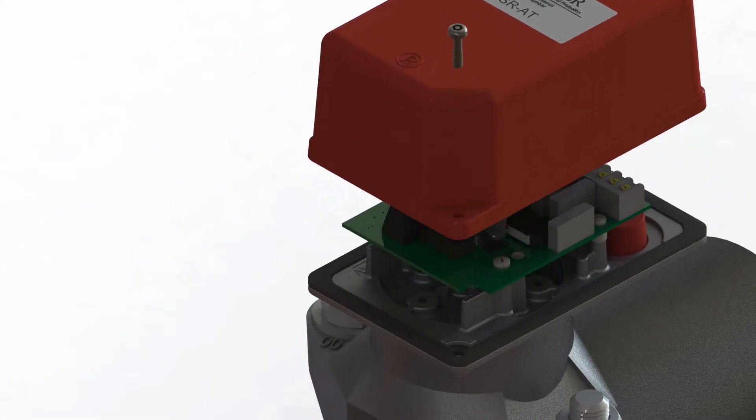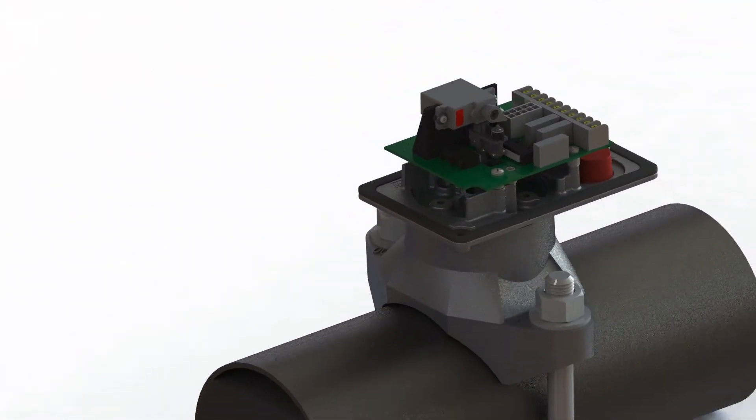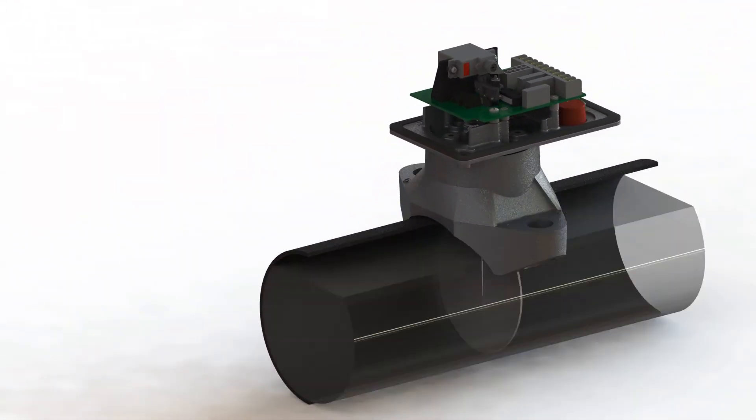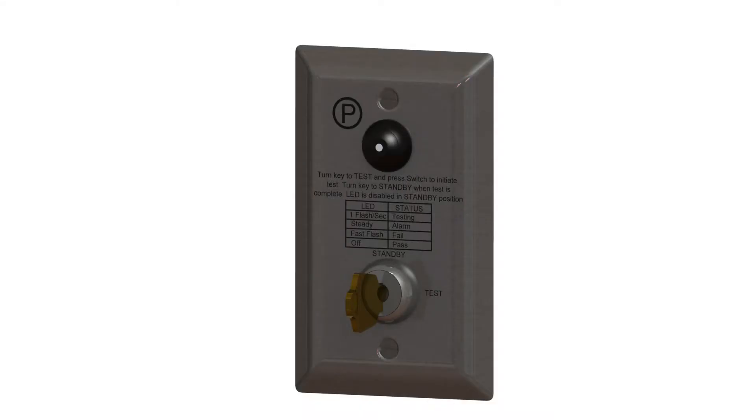This video shows the VSR-AT perform an auto test with water present in the pipe. To initiate the auto test feature of the VSR-AT, turn the key on the ATC test switch to the test position and press the push button.